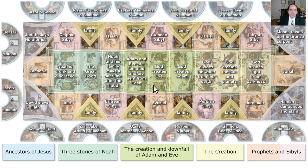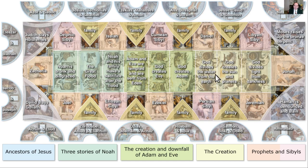Here's just an overview of what's on the Sistine Chapel ceiling — God creating the world, then the creation of man, the downfall, expulsion of Adam and Eve, the Noah story, the flood, and related material in the periphery.